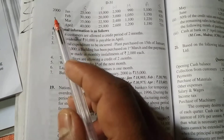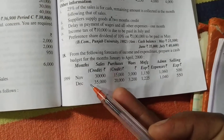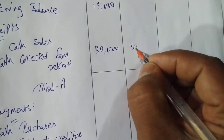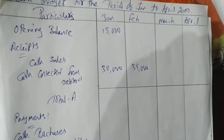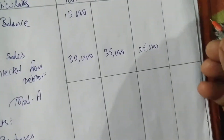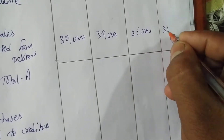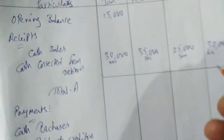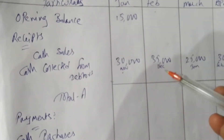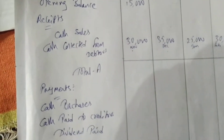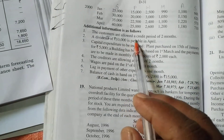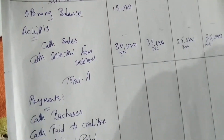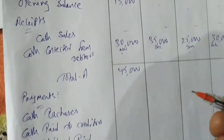Customers have a two-month credit period, so for January we go two months back to November. November sales are 30,000, so in January we collect 30,000. In February we collect December sales. In March we collect January sales of 25,000. In April we collect February sales of 30,000. This gives total receipts of 45,000 for January.